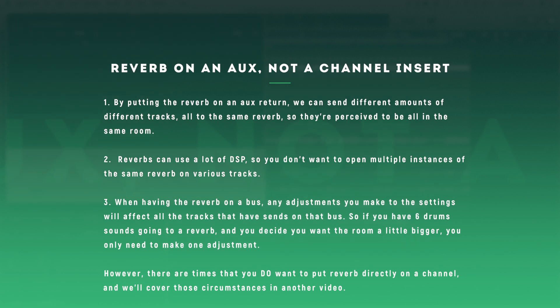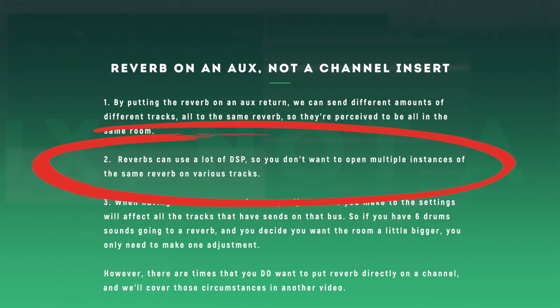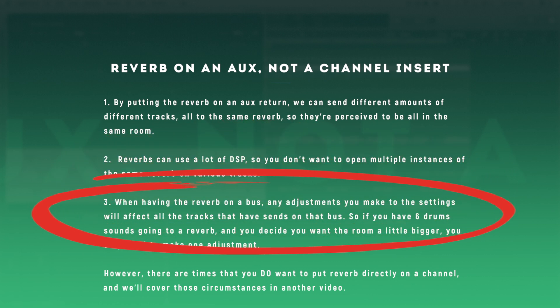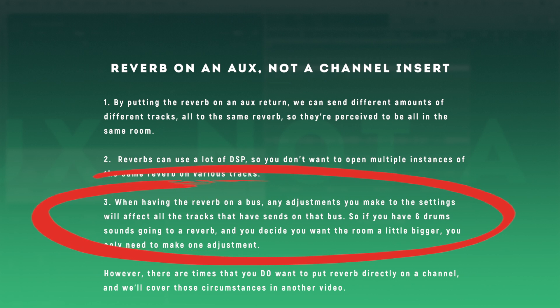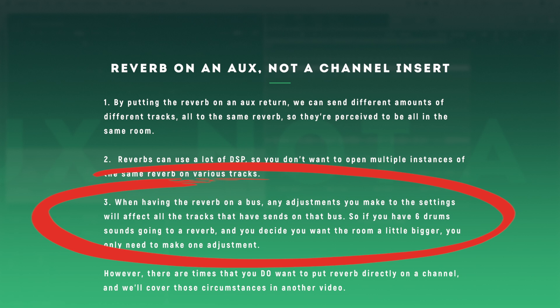There are three good reasons for using an aux return. Number one: by putting the reverb on an aux return we can send different amounts from different tracks all to the same reverb, so they're perceived as being in the same room. Number two: reverbs use a lot of DSP, so you don't want multiple instances of the same reverb on various tracks. Number three: any adjustments you make to the settings will affect all tracks sending to that bus — so if you have six drum sounds going to that reverb and want the room bigger, you only make one adjustment.